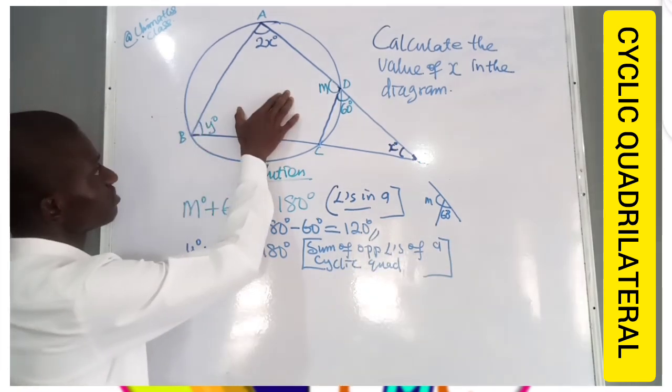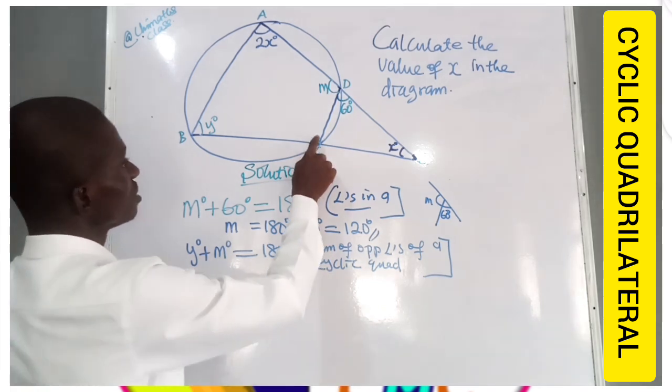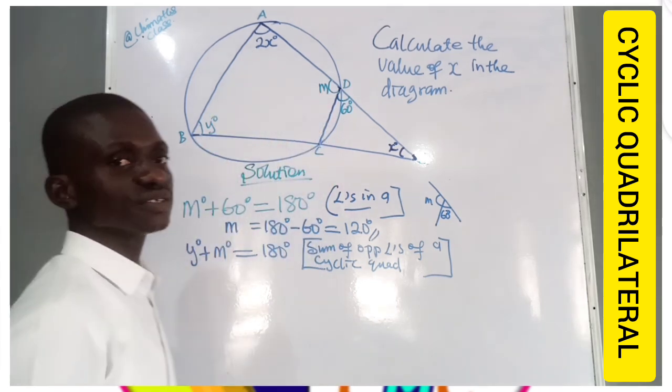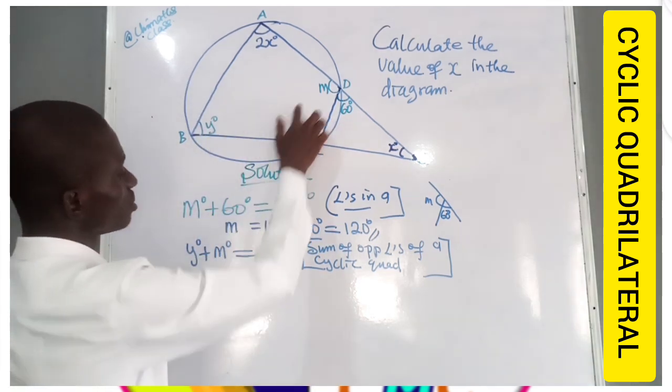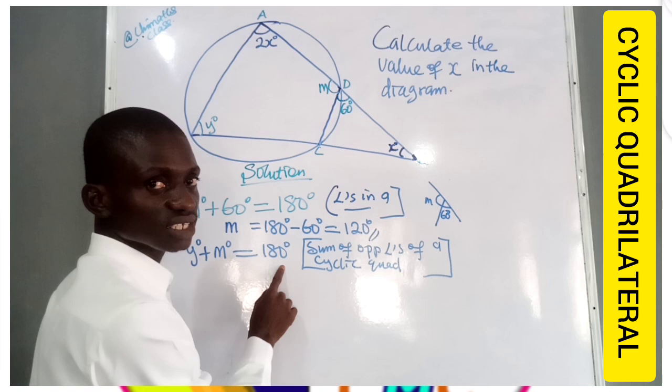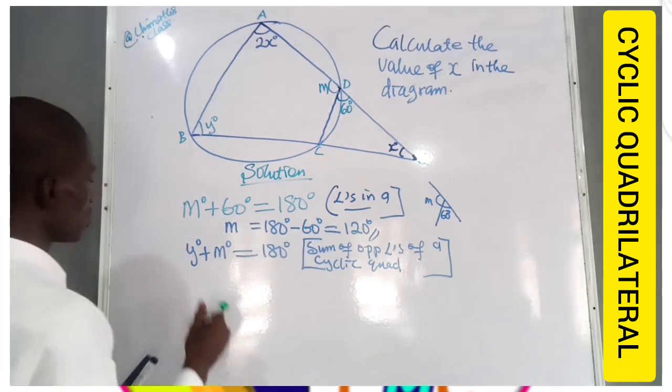This diagram is a cyclic quadrilateral because all the vertices are touching the circumference. So the sum of the opposite angles should give us 180 degrees. Good. But our M is 120 already.